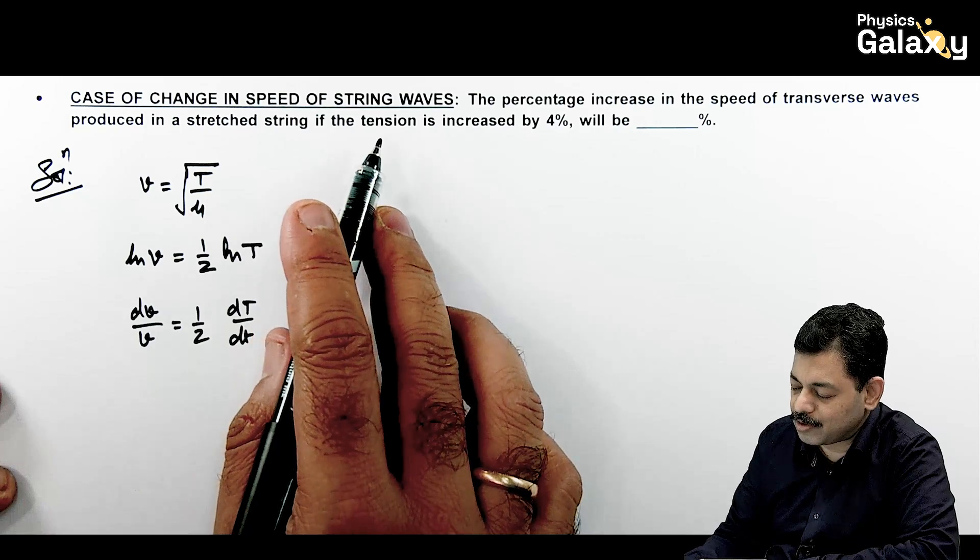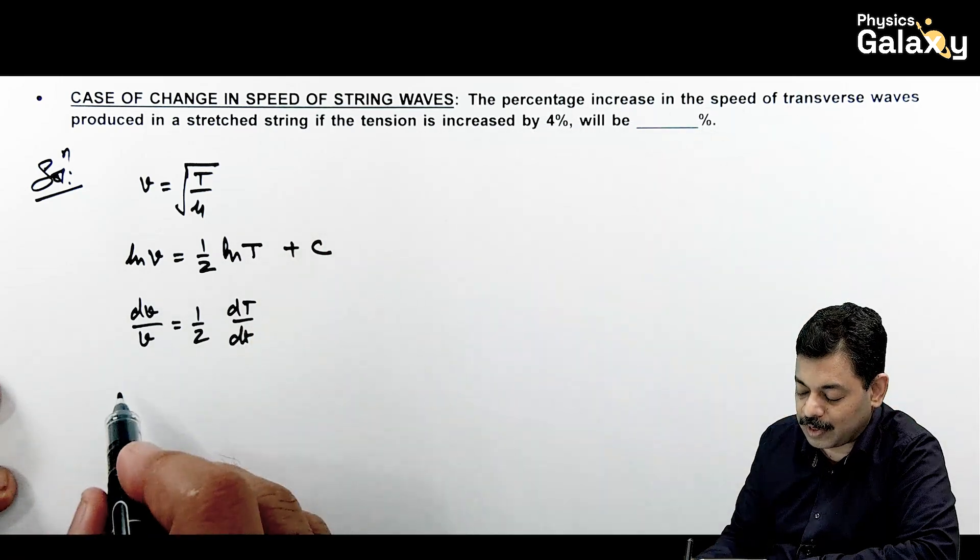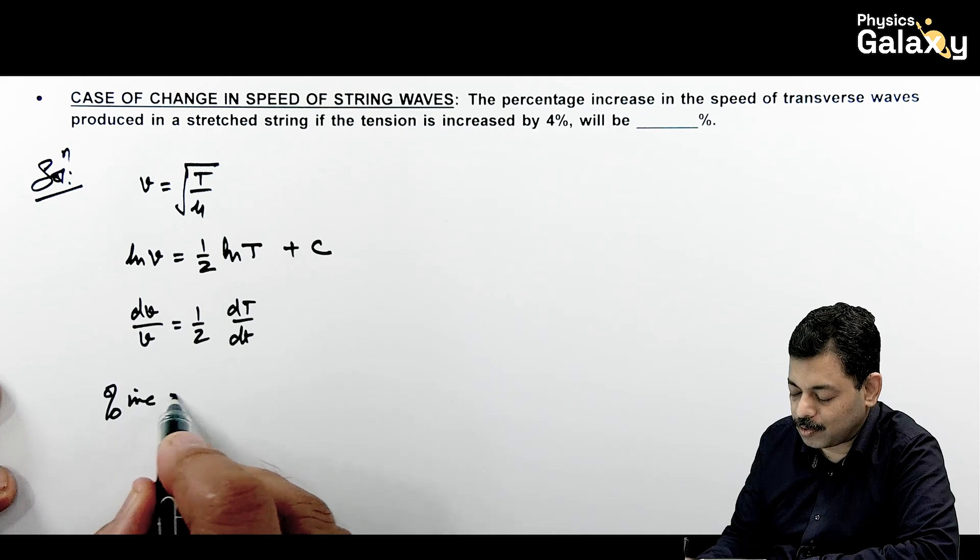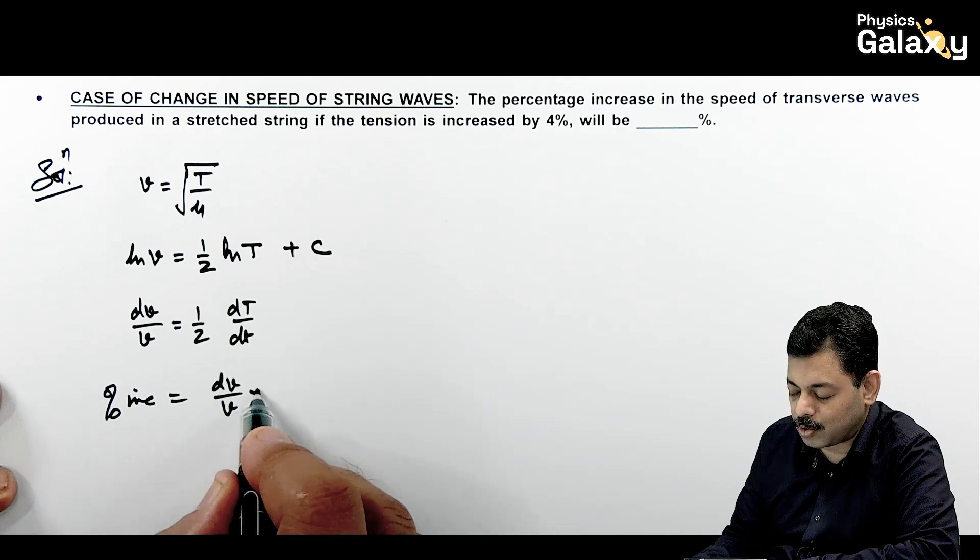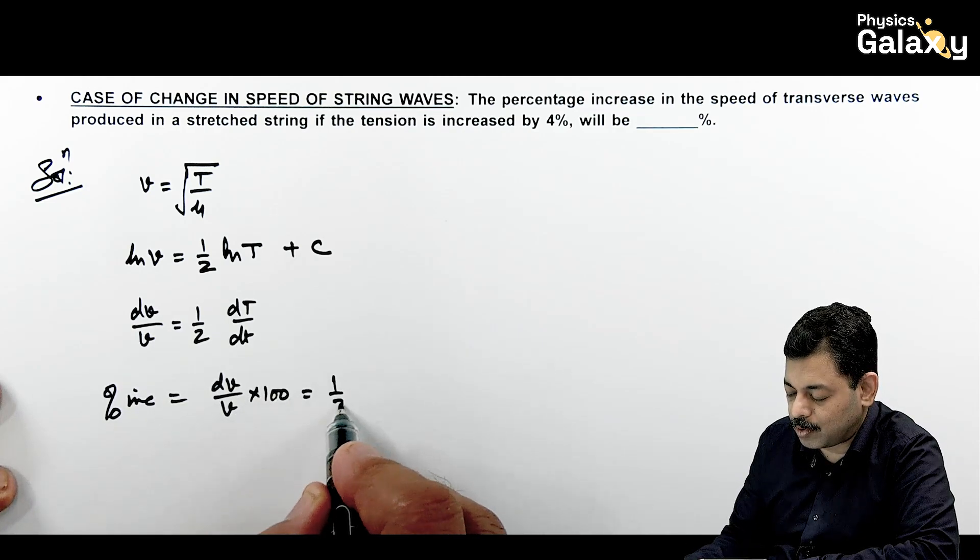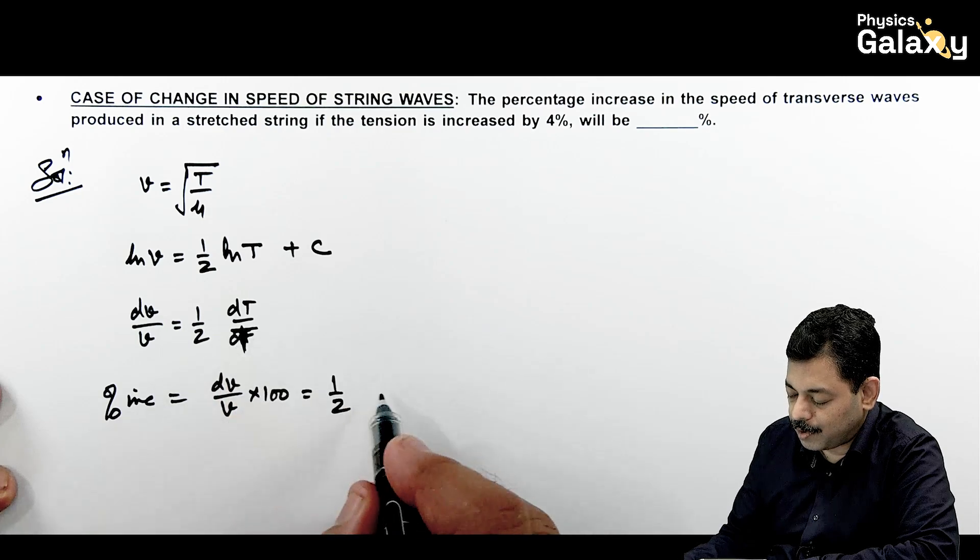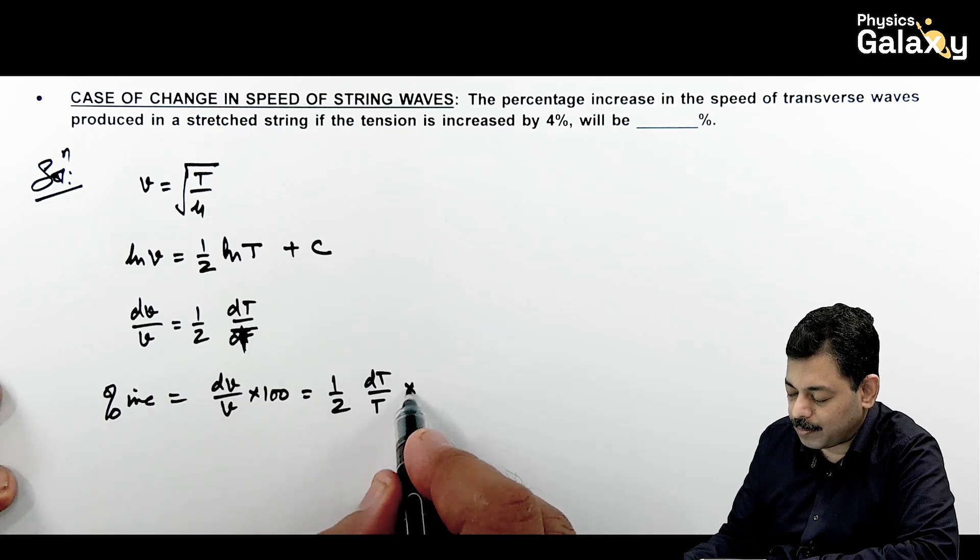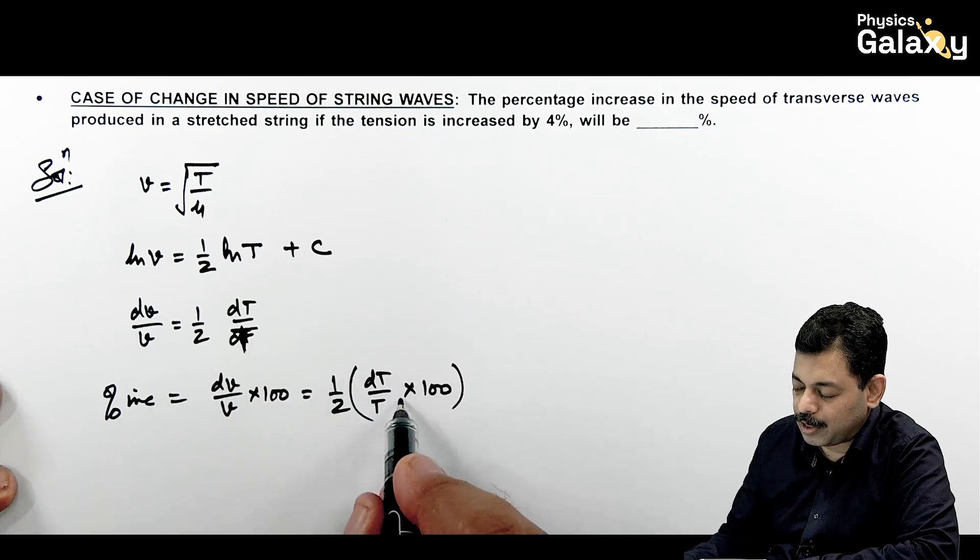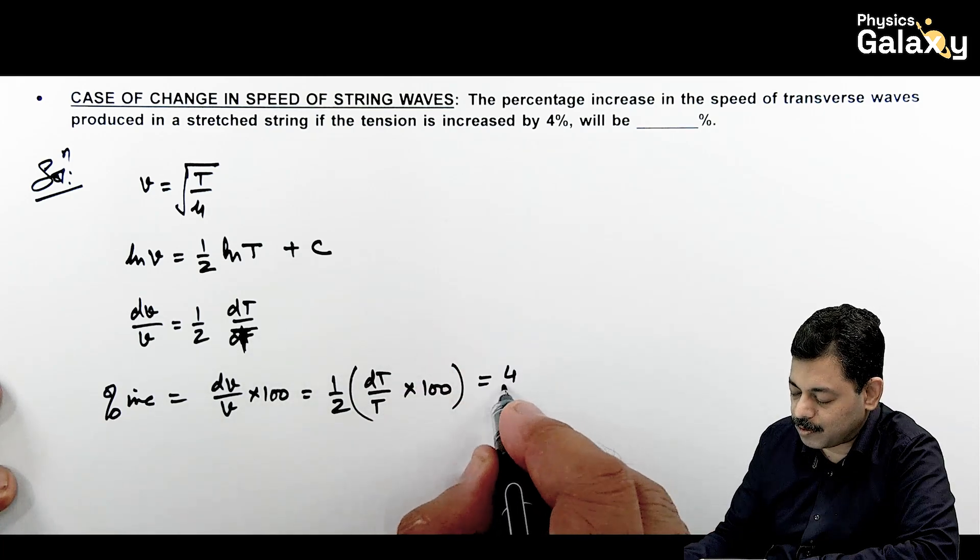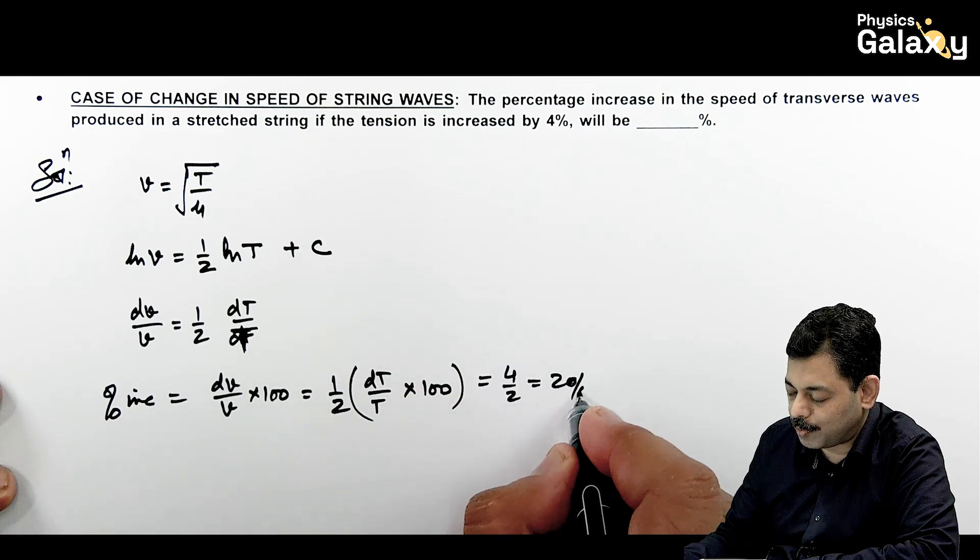Percentage change in speed of wave: percentage increase you write as dv by v into hundred, and this equals half of dt by t multiplied by hundred. So dt by t into hundred is given to us as 4%. Half of this, 4 by 2, comes out to be 2%. That's the answer to this problem.